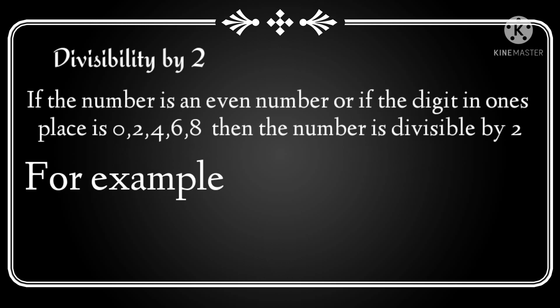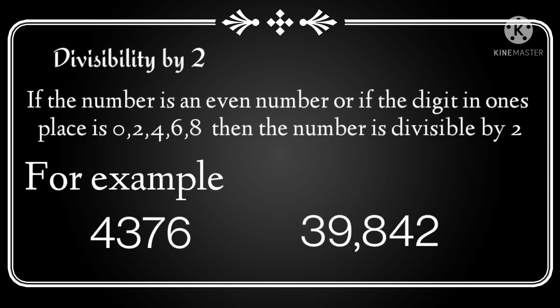Let's discuss it with an example. Here is the number 4376. Look at its 1's place — there is a 6, and this number is an even number. So this number is divisible by 2. Let us take one more example. This is again an even number, or we can say the digit in its 1's place is 2. So again, this number is divisible by 2.